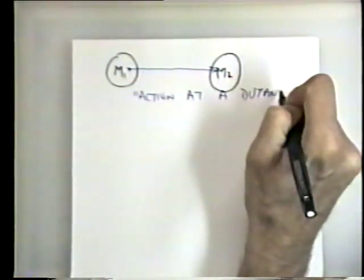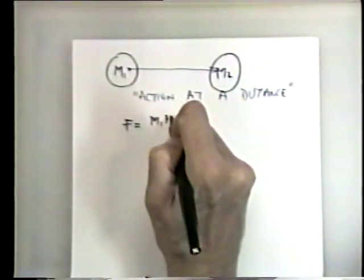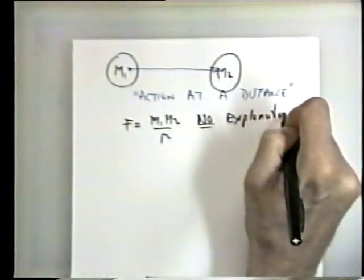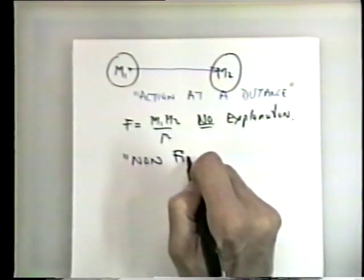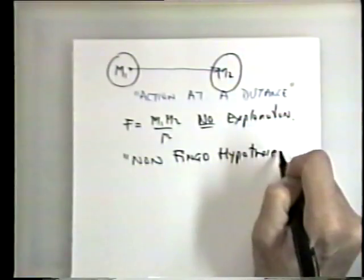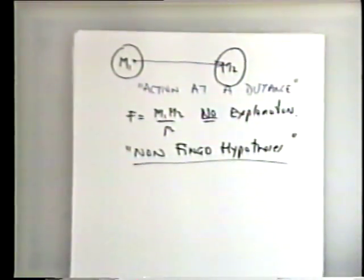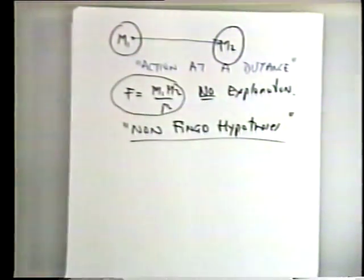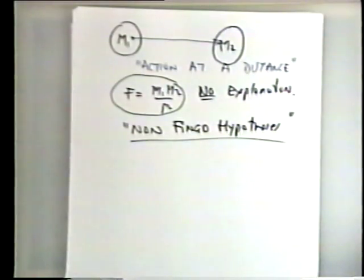There was no discussion in Newton's work as to how this worked — no explanation at all. In a very famous line in his book, written in Latin, Newton said he was not going to make up a hypothesis about how this worked. What Newton was going to do was write down a mathematical law, use it to make predictions, and that was going to have meaning. He wasn't going to make up a story.